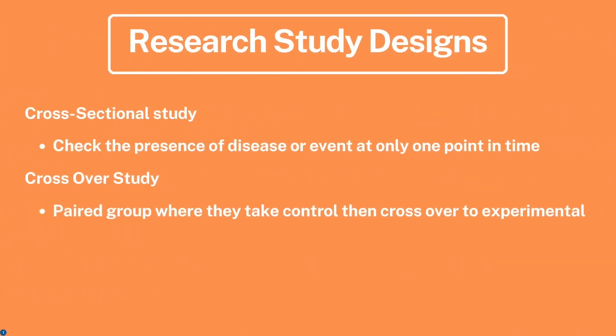Cross-sectional study checks the presence of a disease or event at only one point in time. Crossover study involves a paired group where they first serve as the control — taking a placebo — and then cross over to the experimental side, which could be taking a new medication or new treatment.